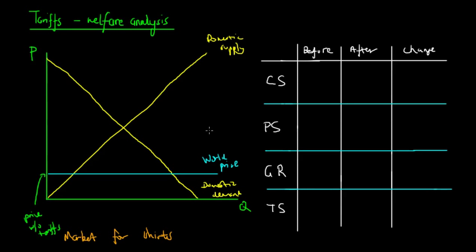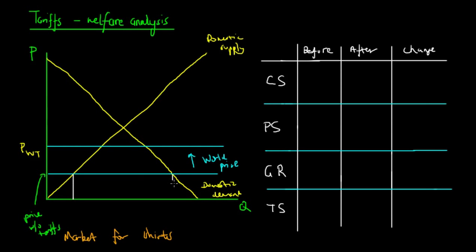Now we'll show what happens to the price of shirts once a tariff is introduced. A tariff is an indirect tax on imported goods, so the price with tariffs — which we'll call Pw+T — bumps up the price, increasing producer surplus to this larger block.